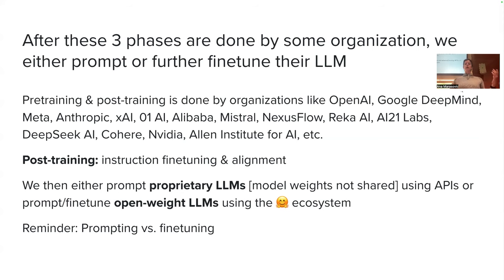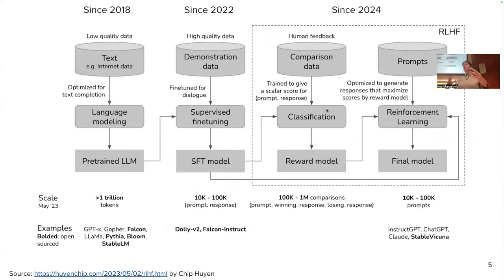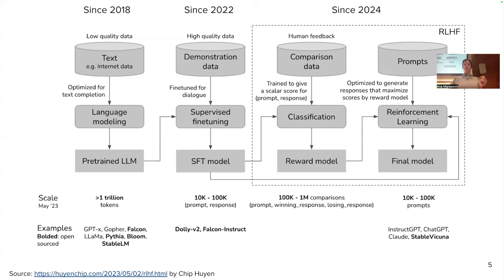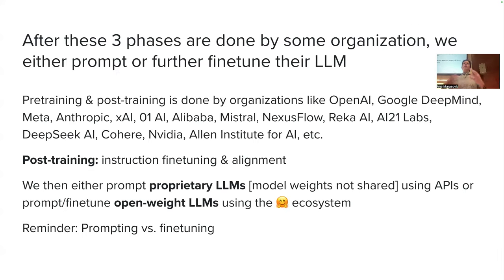Don't be confused thinking that these three large-scale stages are something you are doing. That said, nothing stops you from using reinforcement learning from human feedback if you have data, but it's just not very common. Usually we just use the already-created large language models. These three stages are large-scale experiments — pre-training uses trillions of tokens. In theory you could do instruction fine-tuning and RLHF, but you need a good reason if an already instruction fine-tuned and RLHF model exists.